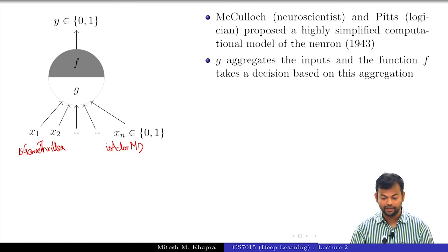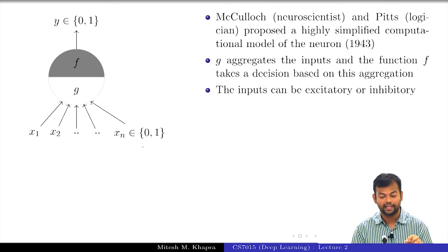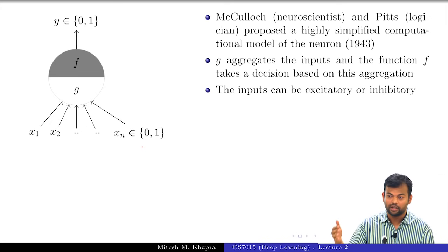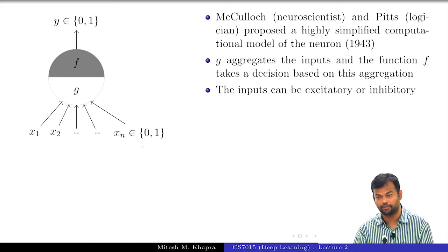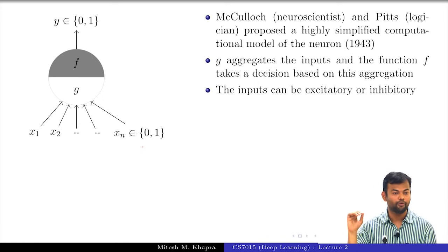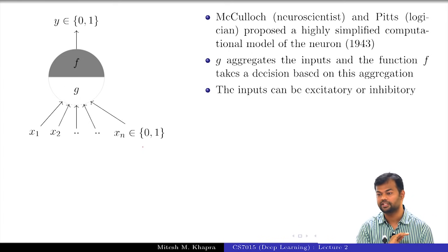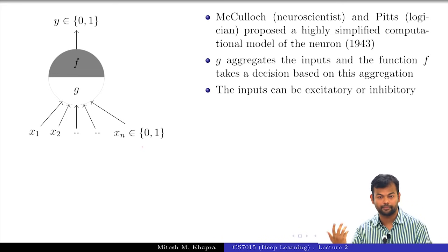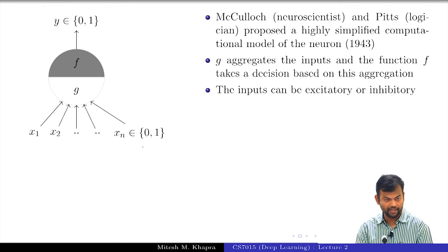Now, the inputs can be either excitatory or inhibitory. One of these inputs could be 'am I ill today, am I down with fever?' If that input is on, irrespective of who the actor, director, or whatever is, I am not going to watch the movie — because I just cannot leave my bed. These are known as inhibitory inputs: irrespective of what else is on in your input features, if this input is on, your output is always going to be 0 — meaning the neuron is never going to fire.